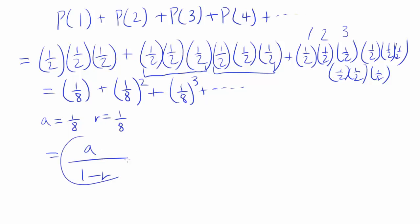I'm probably going to prove this formula in some other video. But for now, let's get right into it. So first term is 1/8 and our ratio is 1/8. So you have 1/8 divided by 7/8, which is 1/7.